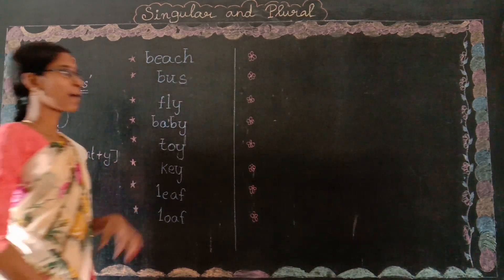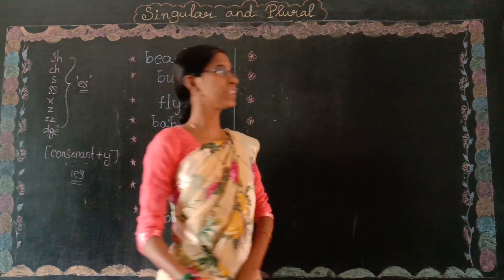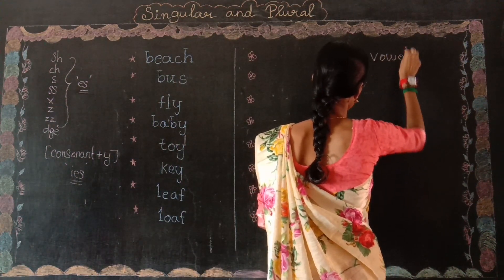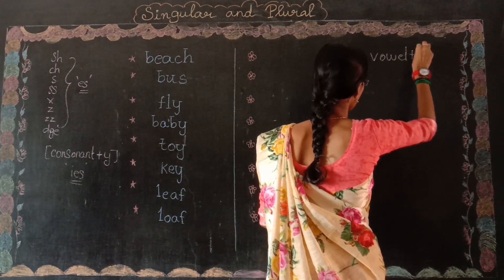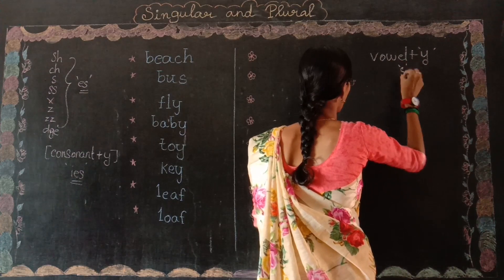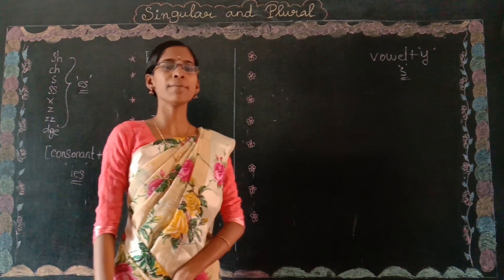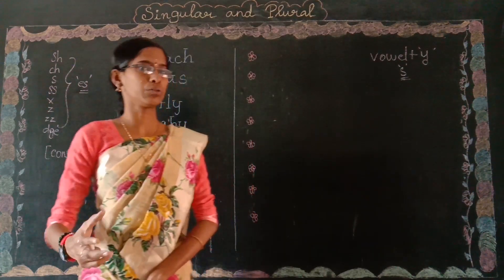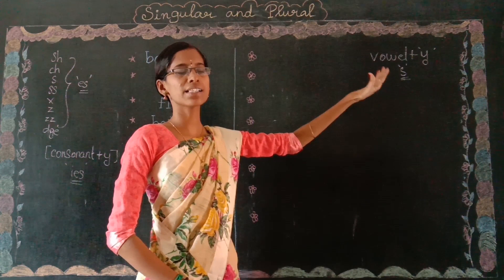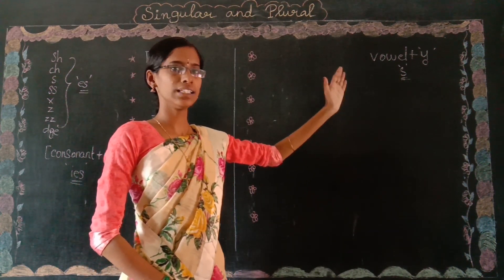In the same way, if a noun ends with a vowel plus Y, then you have to add S to the noun to change it from singular into plural. So if a noun ends with vowel plus Y, just add S.